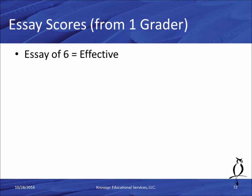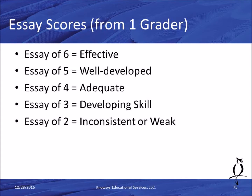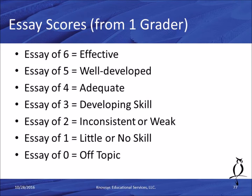Each grader gives you a score of one to six assuming it's on topic and legible. A six is effective, five is well-developed, four is adequate, three represents developing skill with the language, two is inconsistent or very weak skill, and one represents little or no skill. Zero is either off-topic or completely illegible. The dividing line is between the four and the three — a four and above is good. A three and below means developing, inconsistent, weak, little or no skill — scores you don't want to get.